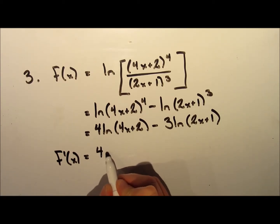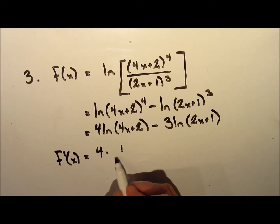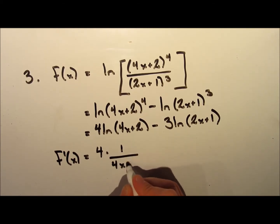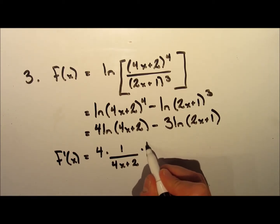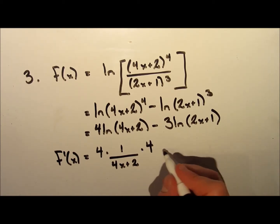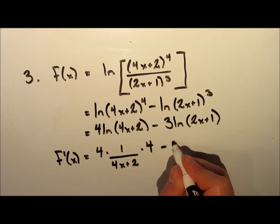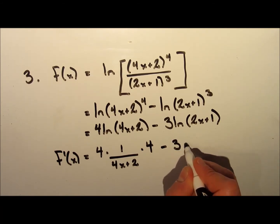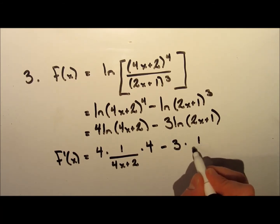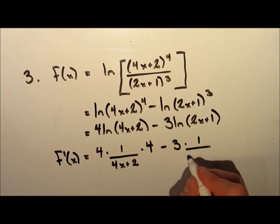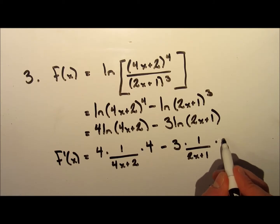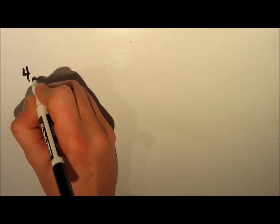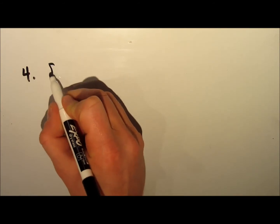Now we're in a better position to take the derivative. For the first term, we take the constant 4 out front, multiply it by 1 over (4x plus 2), then multiply by the derivative of (4x plus 2), which is 4. For the second term, we have 3 out front, multiplied by 1 over (2x plus 1), then multiplied by the derivative of (2x plus 1), which is 2. I'll leave the simplification to you.